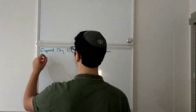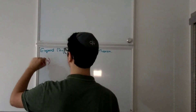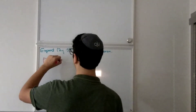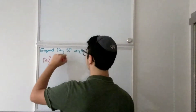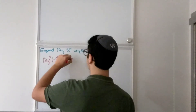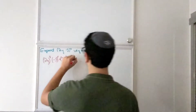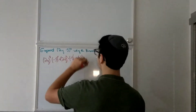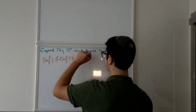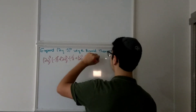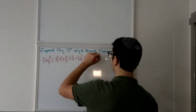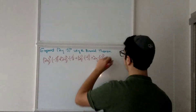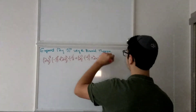It's going to be (2y)^4 times (-3)^0, plus (2y)^3 times (-3)^1, plus (2y)^2 times (-3)^2, plus (2y)^1 times (-3)^3, plus (-3)^4.